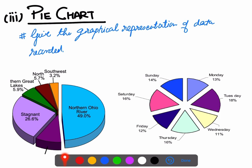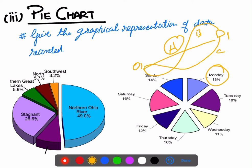The third and simplest method is the pie chart. Whatever data is collected is divided into percentages, and from there we represent — for example, route A connecting O1 to D1, route B, route C. On Monday, 13% of vehicles used route A; on Tuesday, 18% used route A, and so on. For each route, a pie chart is represented. Similarly, the population travelling from one place to another can be represented this way. These are the three main ways in which origin and destination data are represented.